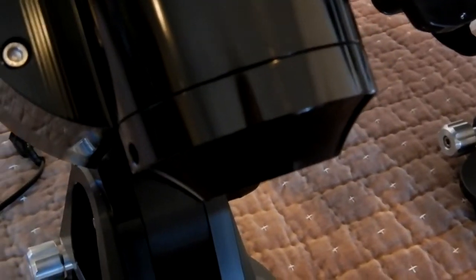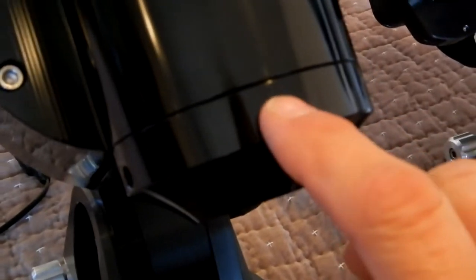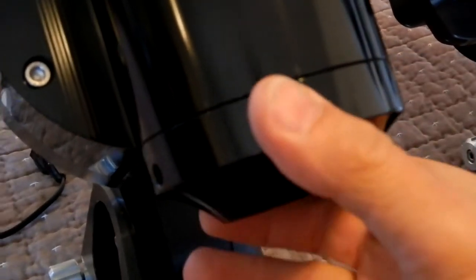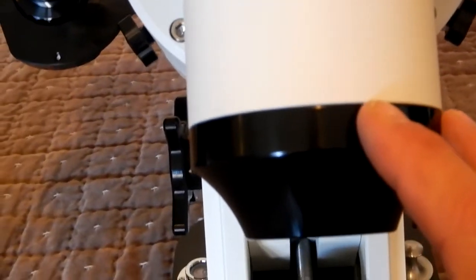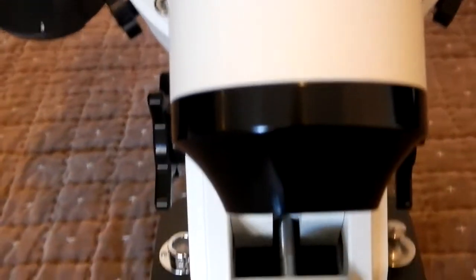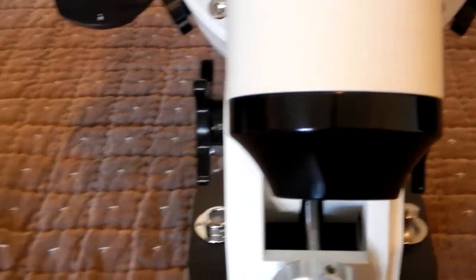And one other thing to point out on the Mach 1: this counterweight cap does unscrew from the Mach 1. But on the Mach 2, you might not be able to see it here, but those holes are filled - you cannot take it apart. And I would believe that might be because of the internal cabling and not needing to get into it.